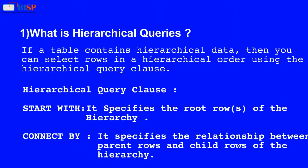Hierarchical Query Clause: START WITH specifies the root row of the hierarchy. CONNECT BY specifies the relationship between parent rows and child rows of the hierarchy.